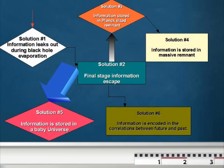The fifth solution is that information is stored in a baby universe that separates from our own universe. The drawback on that solution is that baby universes at this time have no empirical evidence. The sixth solution is that information is encoded in the correlations between future and past. The drawback of that solution is that it apparently contradicts the temporal evolution of nature.